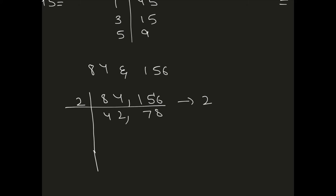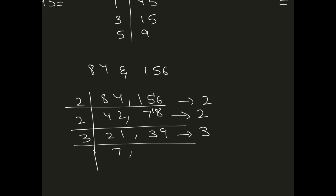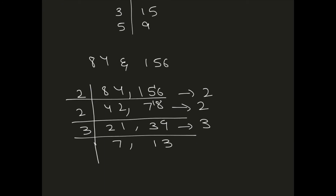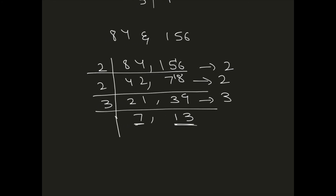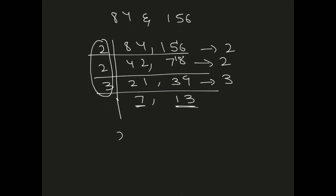Dividing 84 by 2 gives 42, and 156 by 2 gives 78. Both are still even so we divide by 2 again: 42 becomes 21, and 78 becomes 39. Now these cannot be divided by 2, but both can be divided by 3: 21 divided by 3 is 7, and 39 divided by 3 is 13. Since 7 and 13 are both prime and share no common factor, we stop here. The common prime factors used are 2, 2, and 3.